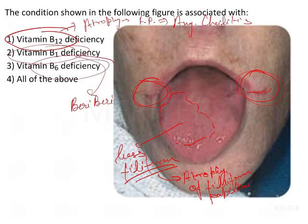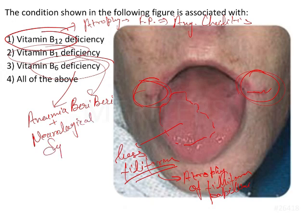Then we have vitamin B6 deficiency. Now this B6 deficiency is basically associated with anemia that shows neurological symptoms. It is generally seen in patients on antitubercular therapy as well.